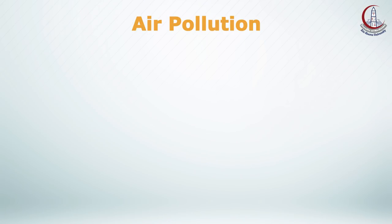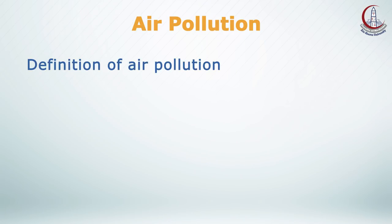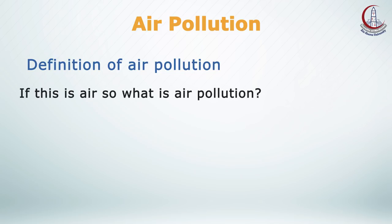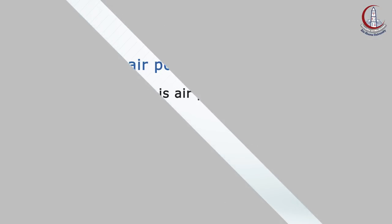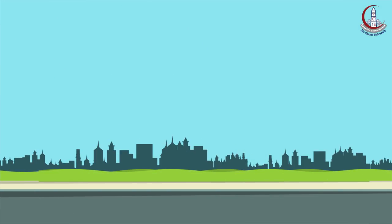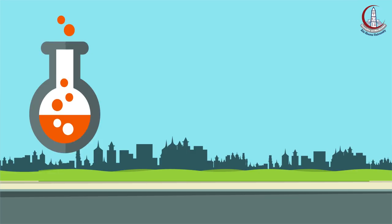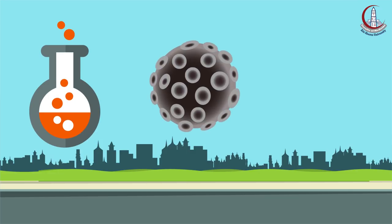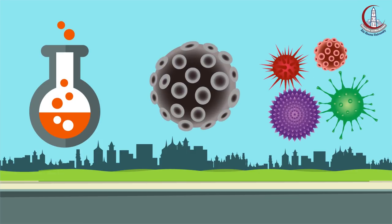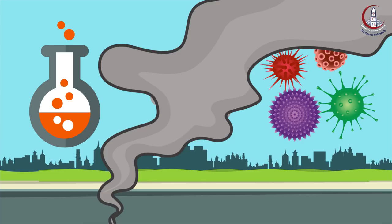After introducing the normal composition of air, we can now ask: what is air pollution? Air pollution is the introduction of chemicals, particulates, biological material, or any other harmful material into the Earth's atmosphere.